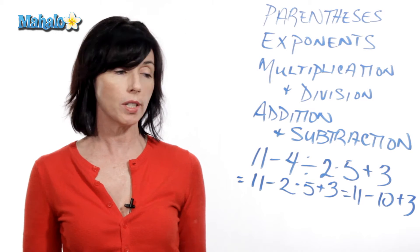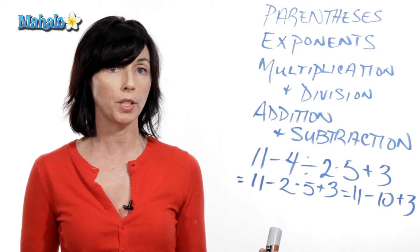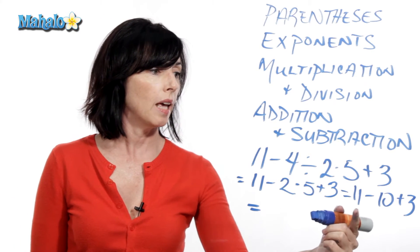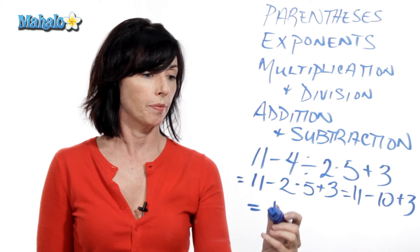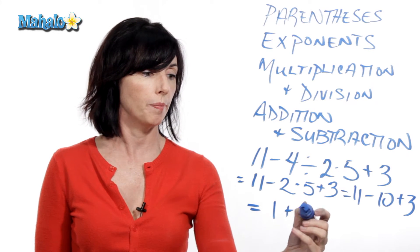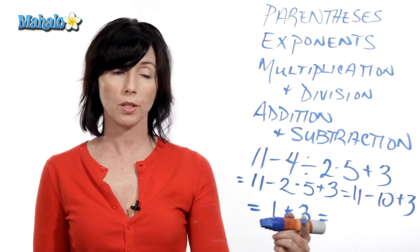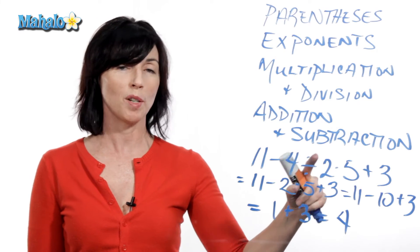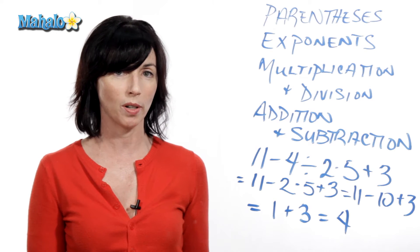So now I just have addition and subtraction, and I'm going to do them left to right. 11 minus 10 is 1, and then I still have my plus 3. 1 plus 3 is 4. So 11 minus 4 divided by 2 times 5 plus 3 is really just equal to 4.